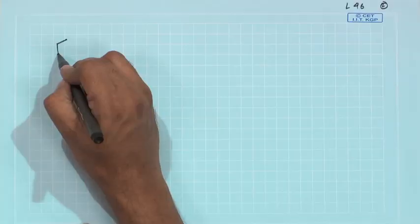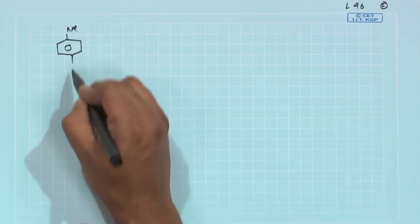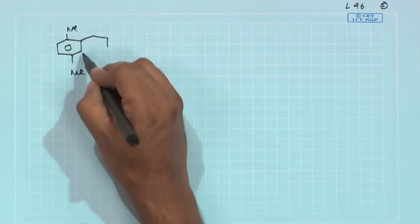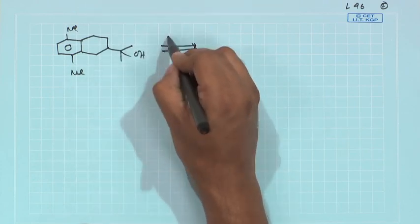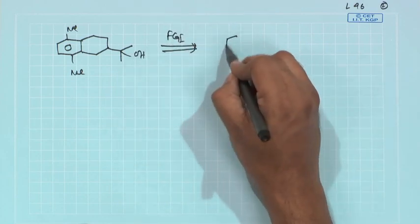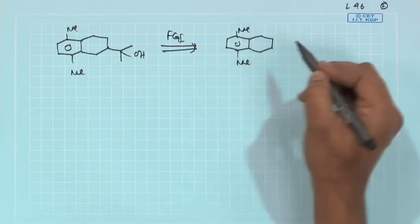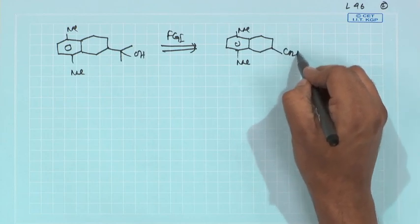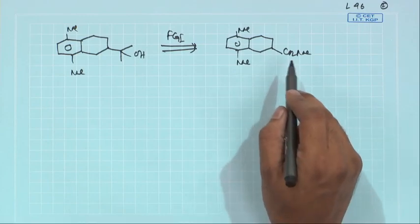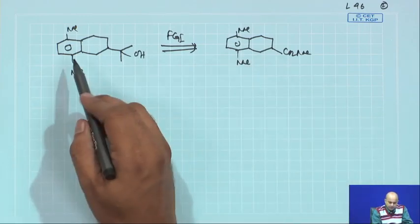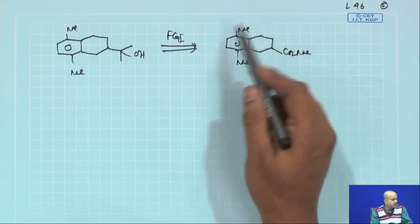We will first draw the Ocidol structure again as our target molecule. The initial FGI will be the Grignard reaction. This particular compound is similar: this part has local symmetry, this part has pseudo-symmetry, and the entire molecule is pseudo-symmetrical.